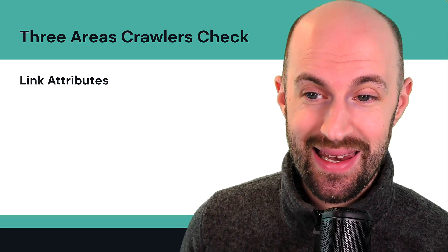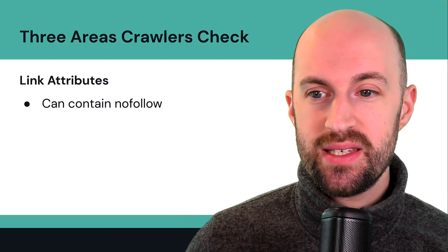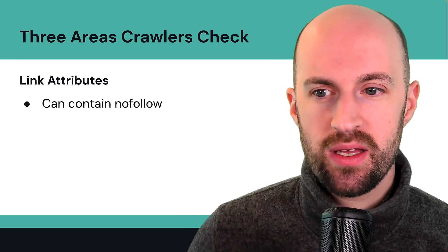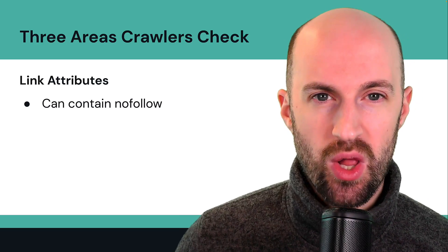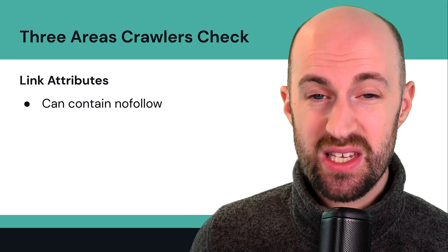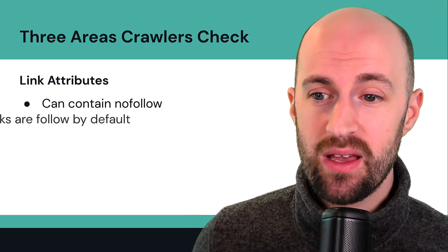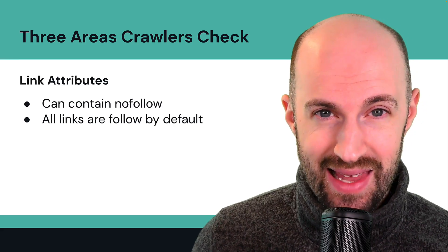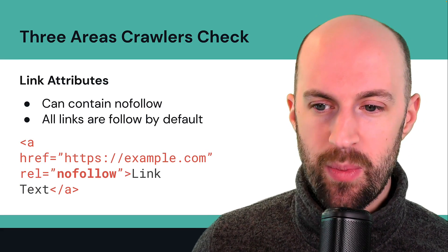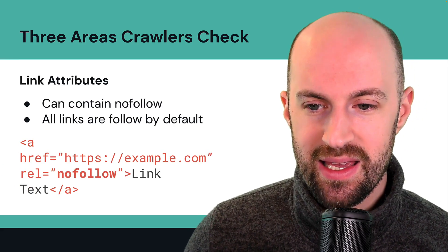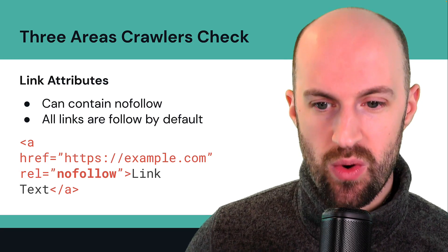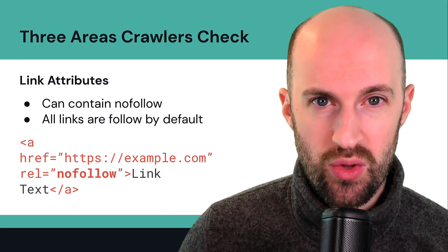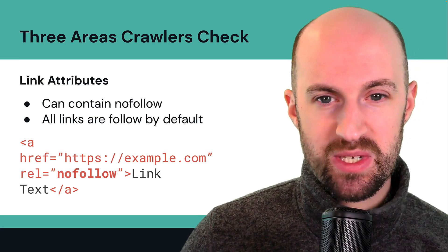The third area is link attributes. These are within each link and contain a nofollow attribute, which says don't follow this specific link. All links are followed by default unless otherwise specified. For example, this link has a nofollow attribute, so it tells the bots: don't follow through, don't go to this specific page.